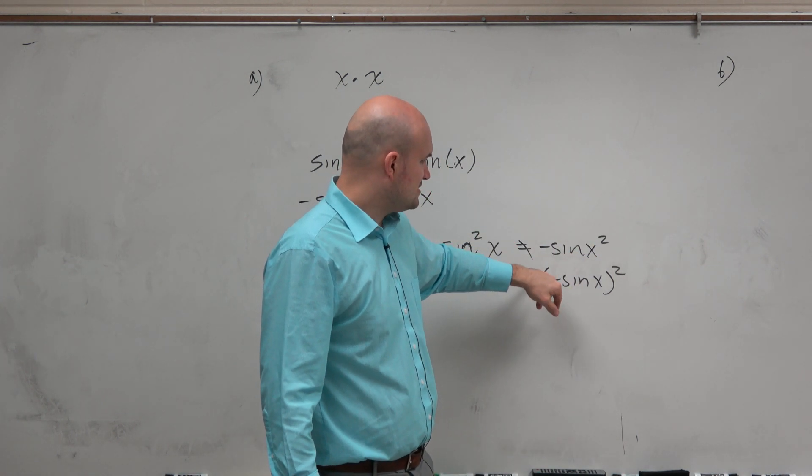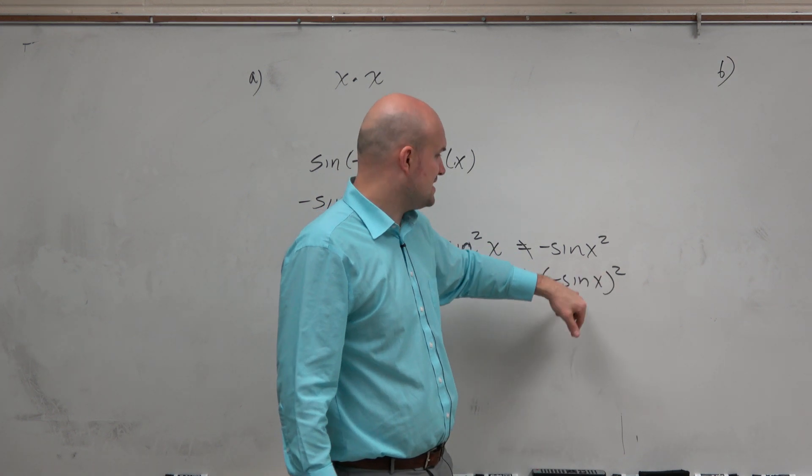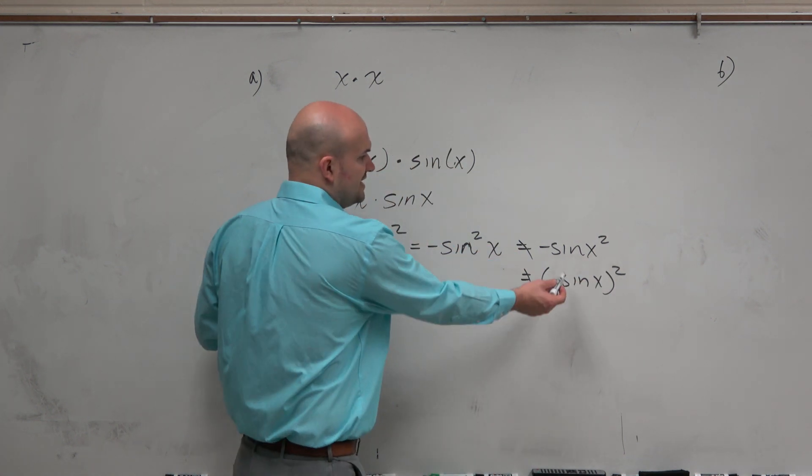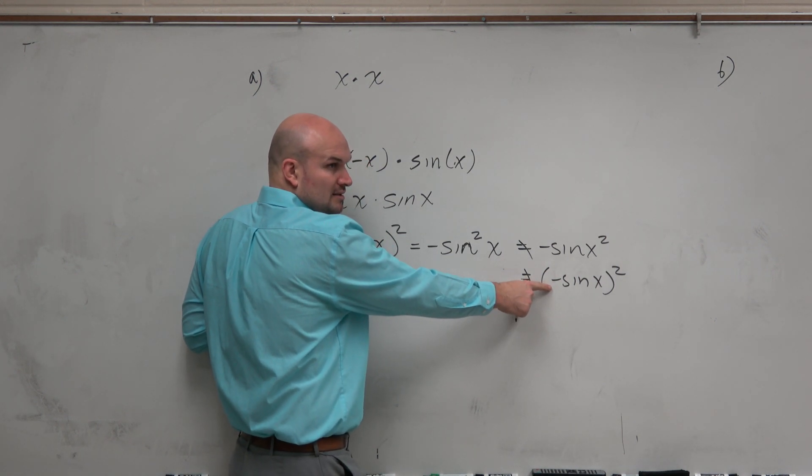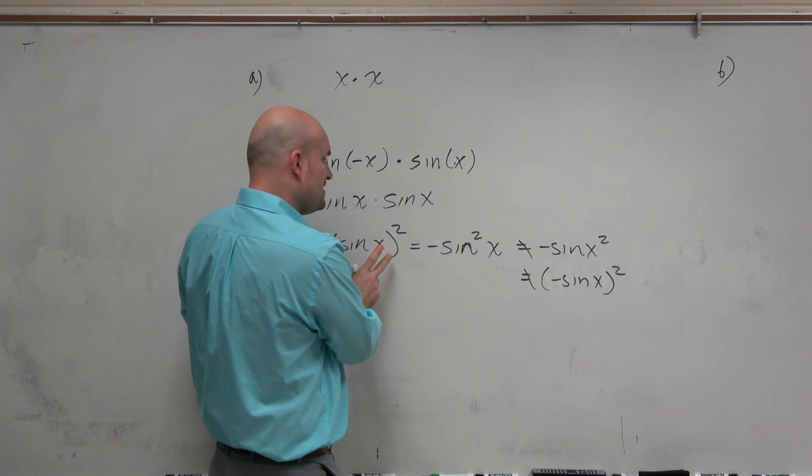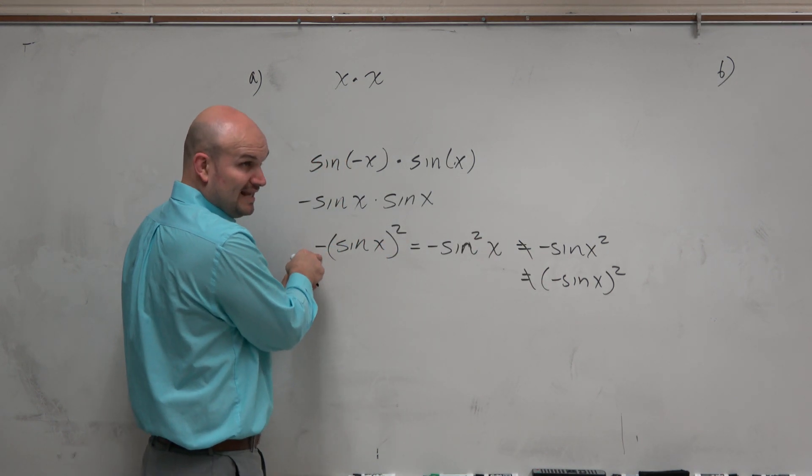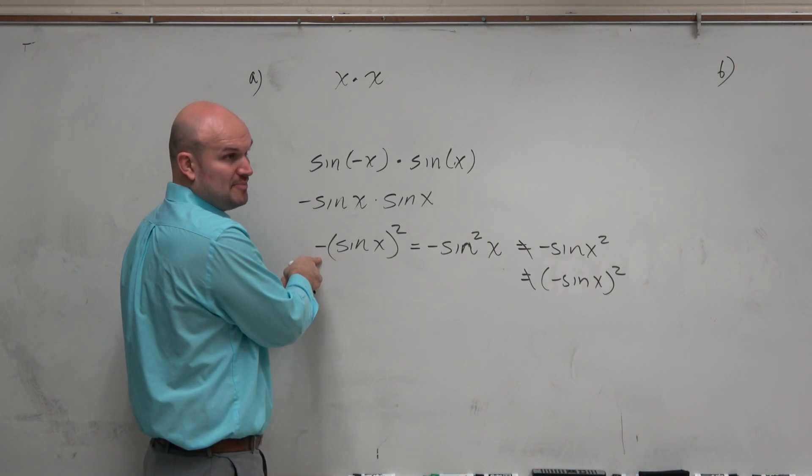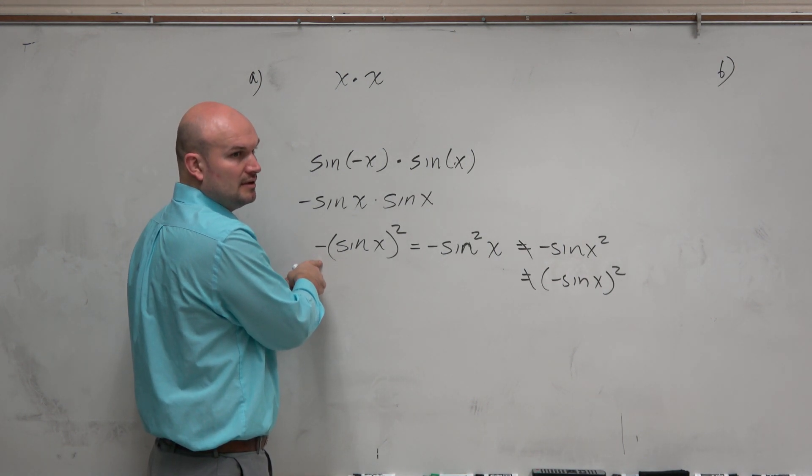Second thing: don't say it's negative sine of x times sine of x, because negative sine squared of x would imply squaring that negative one. It's inside the parentheses, so where the parentheses lie, or where that negative lies, is very important. Because it's a negative times a positive, which we know makes it a negative.